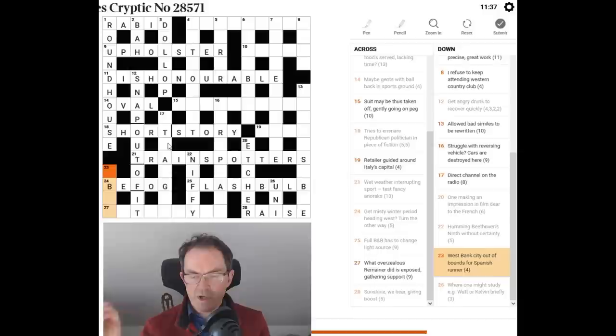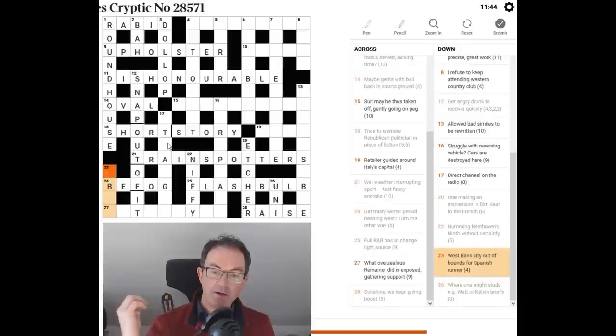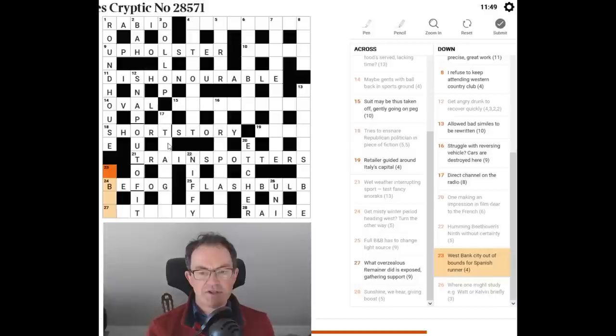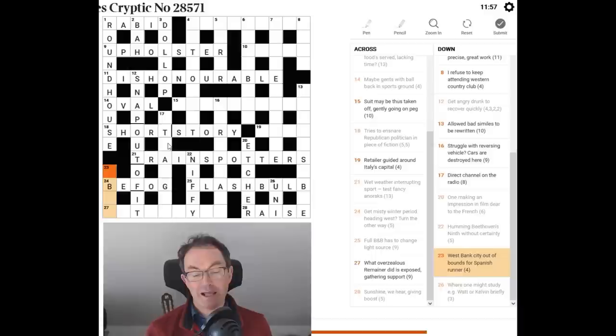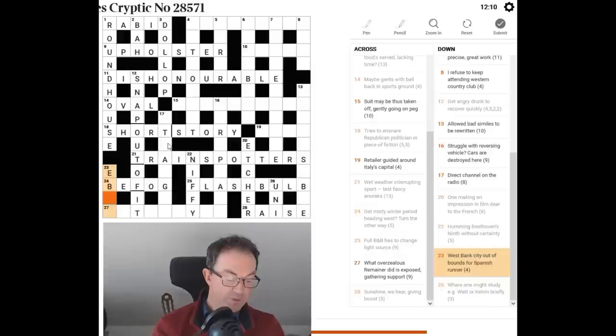This is absolutely unbelievable. So 23 down. West Bank City out of bounds for Spanish runner. Oh okay. I think I know this. I do know this. This is a. This will test your geography. So there is a. When we see the word runner in a cryptic crossword. It's like the word flower. Where we can think of flower as being flower. Something that flows. A river. So flower will often indicate a river. As will runner. Because rivers run.